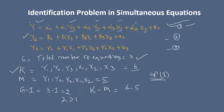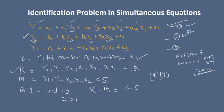Similarly for equation 2, K is still 6. For equation 2, M equals 4 (counting the variables in that equation). G minus 1 equals 2, and K minus M equals 6 minus 4 equals 2. Since 2 equals 2, equation 2 is exactly identified. For equation 3, M is also 4 and K is 6, giving the same result — equation 3 is also exactly identified.